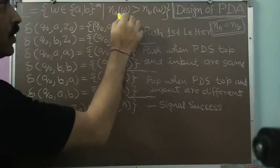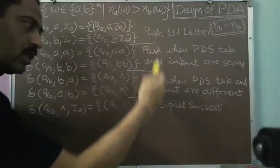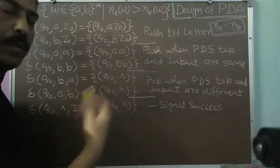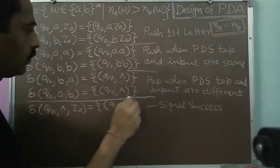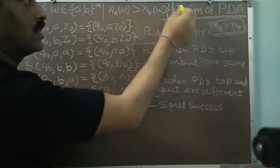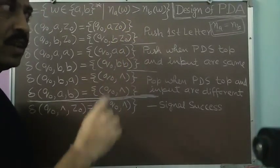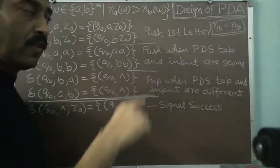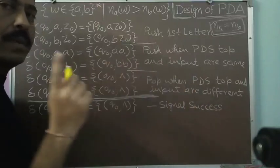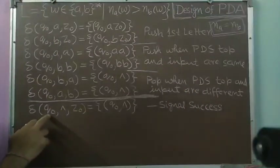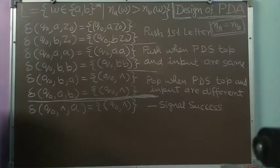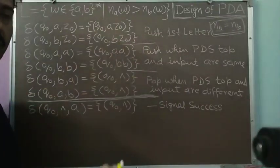Now we want the number of a's to be greater than the number of b's. The overall strategy remains the same: push the first symbol, push when similar symbols appear, pop when different symbols appear — all those transitions stay the same. The difference is that when our string finishes we should have some a's left on the pushdown store, meaning the topmost symbol will be a, not z0. So we need to remove those remaining a's to make the store empty and signal success.